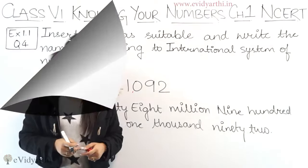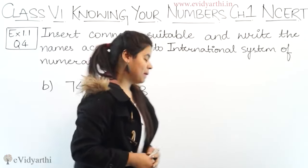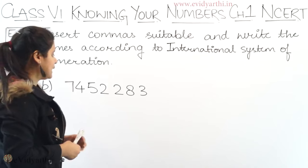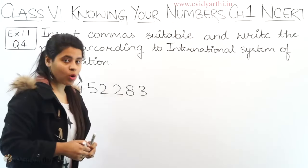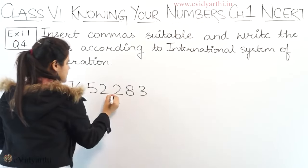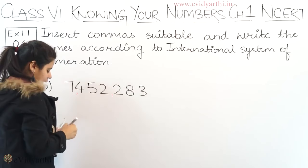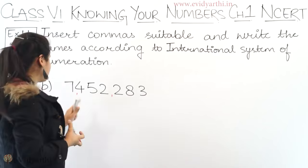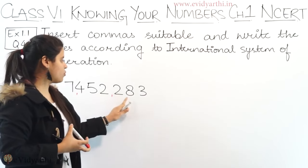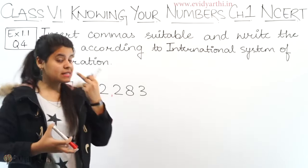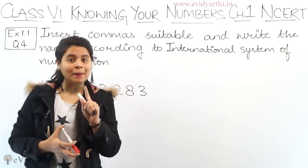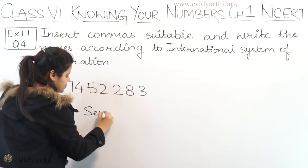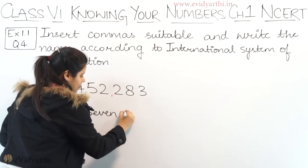Now coming to part B. The number is 7,452,283. First of all, we put the commas — three digits first, then again three digits. The first number we have is 7. After 7 there are 6 digits. 6 digits means million. So we will write it as 7 million.